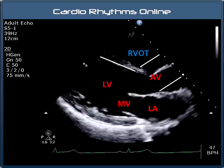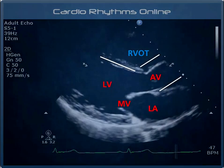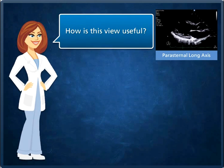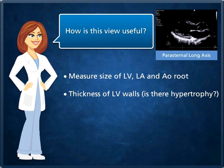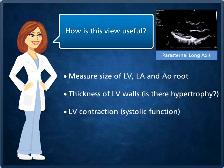Here we can also see the aortic root. We mainly use the parasternal view to measure the size of the left ventricle, left atrium and aortic root, and to measure the thickness of the left ventricular walls, checking for abnormalities such as hypertrophy. Although we can't see all the segments of the left ventricle at this point, we will also form an impression of how well the left ventricle is contracting. We then take our first look at the aortic and mitral valves.